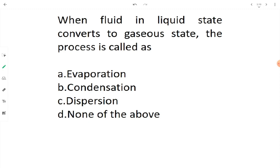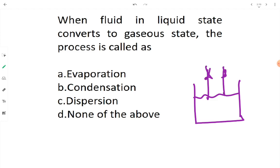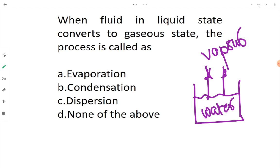Question one asks: when a fluid in liquid state converts to gaseous state, the process is called what? For example, if we have a container filled with water and it gets converted into gaseous state, the water is converting itself into vapor. This specific process of conversion of liquid to gaseous state is called evaporation.